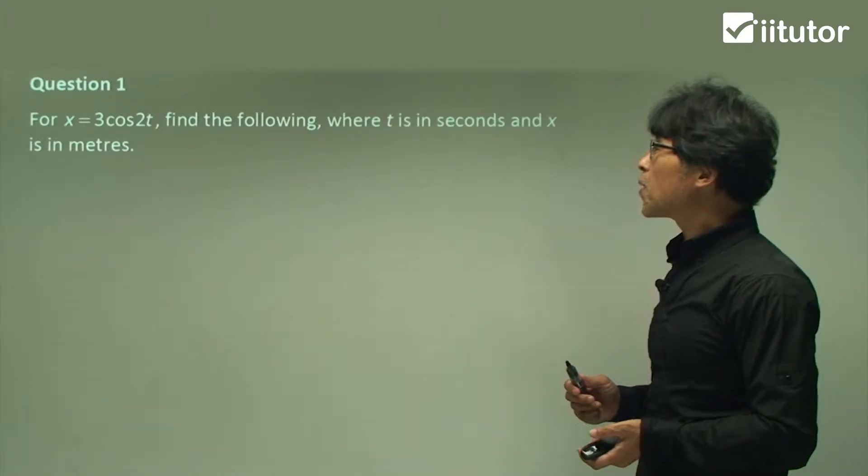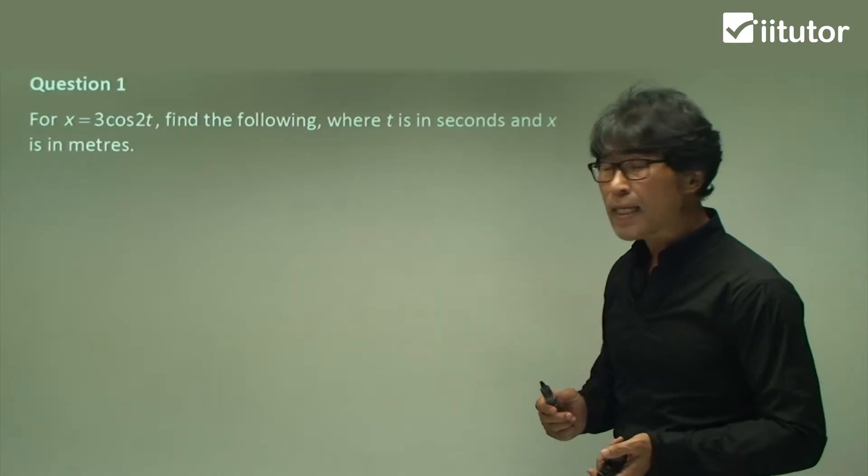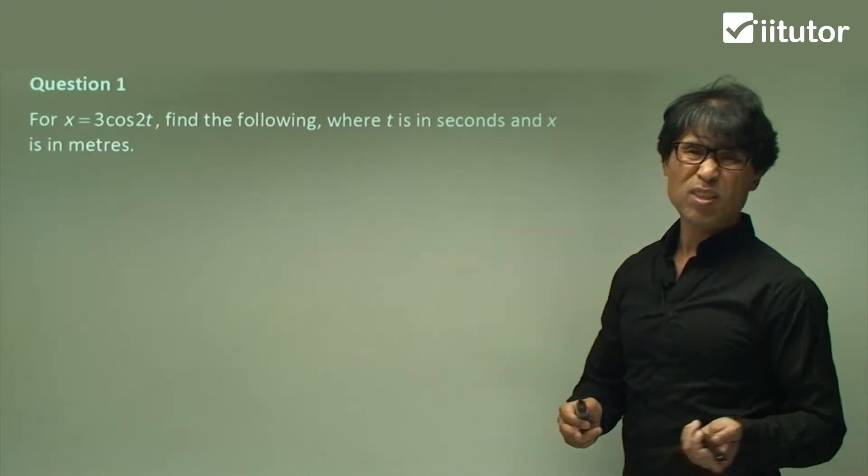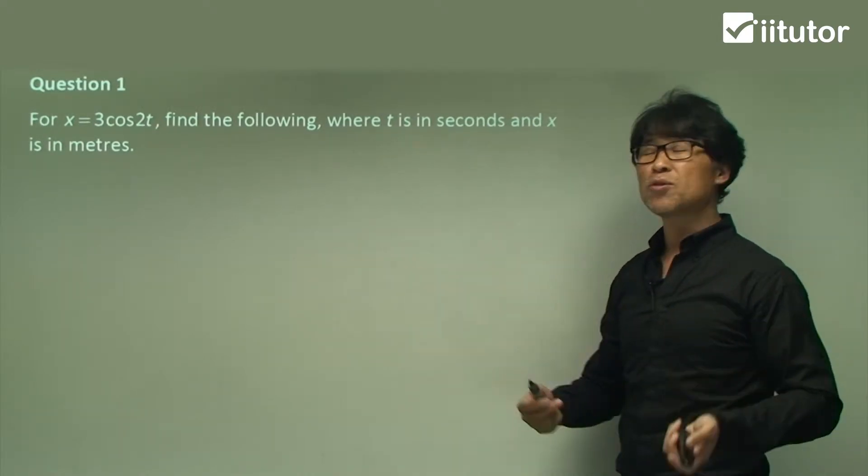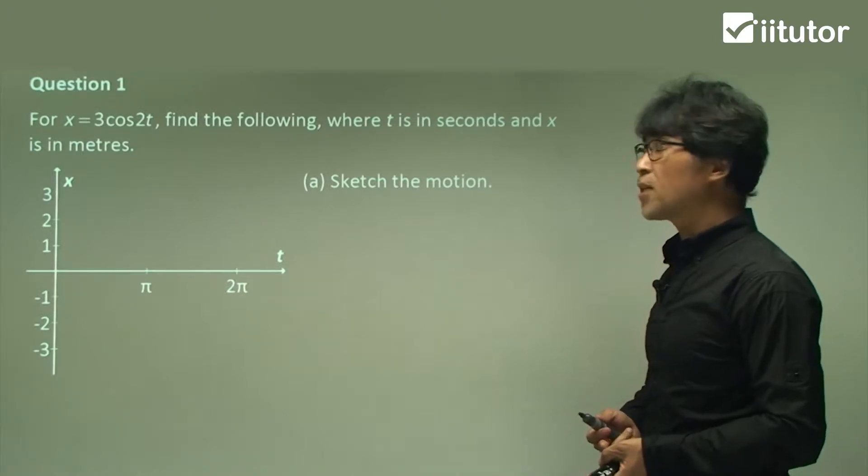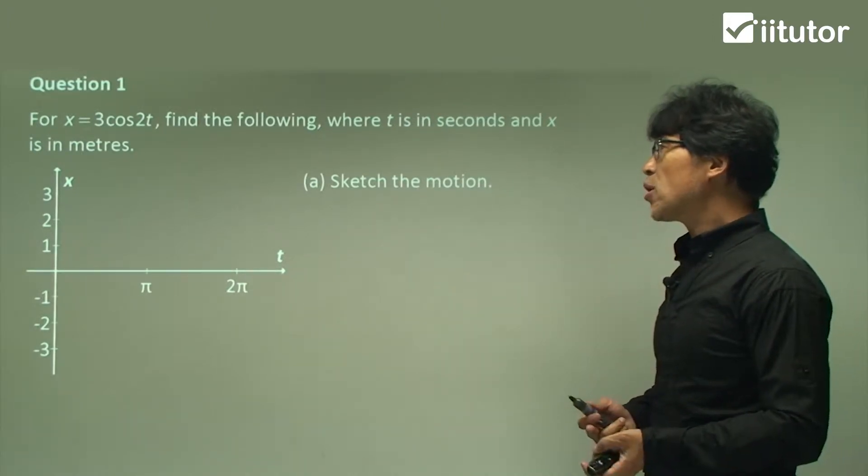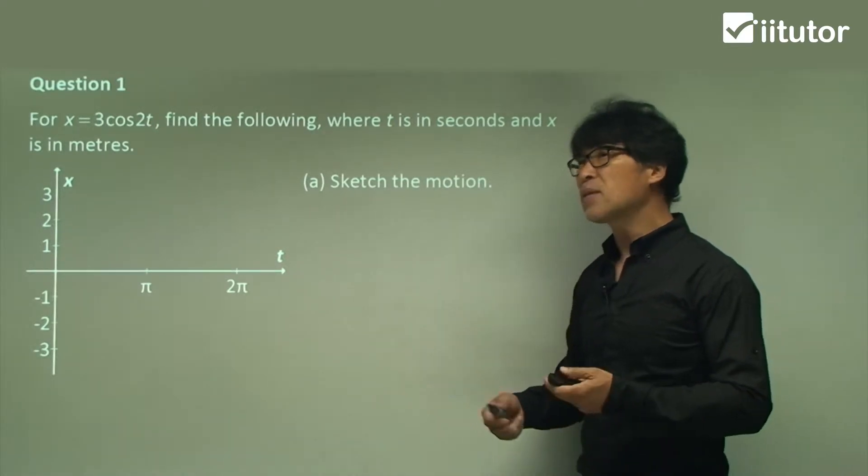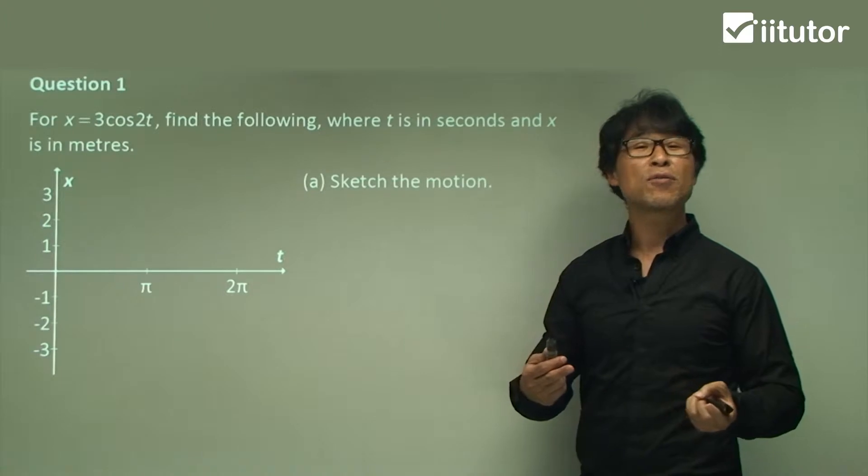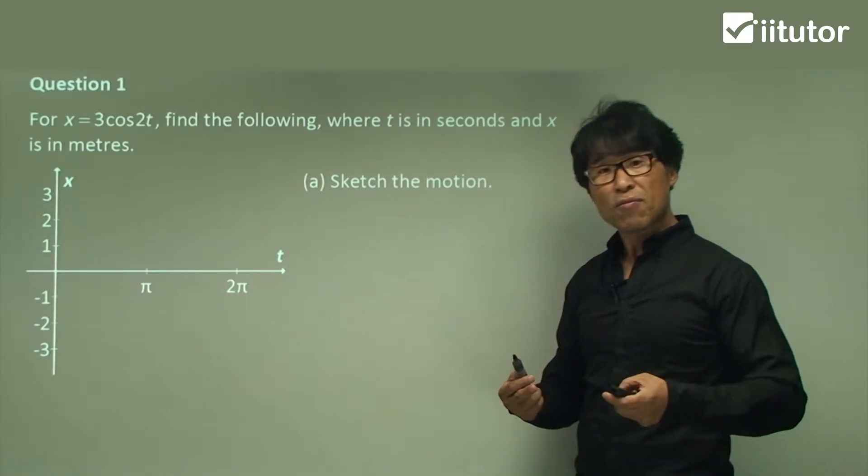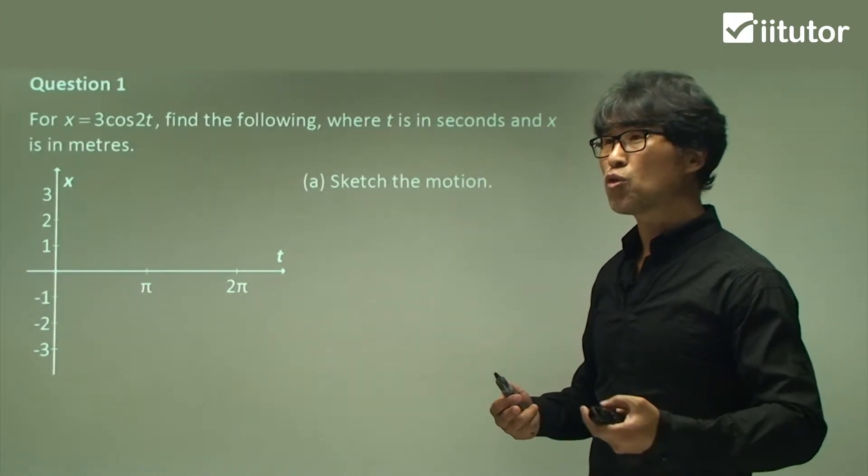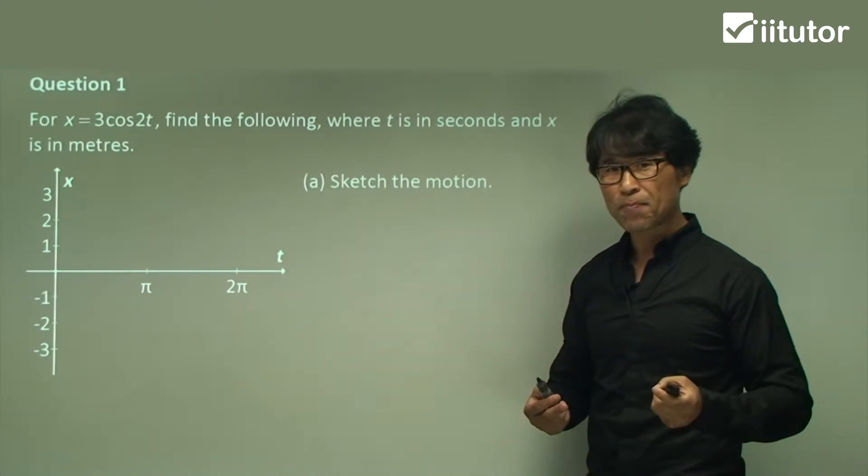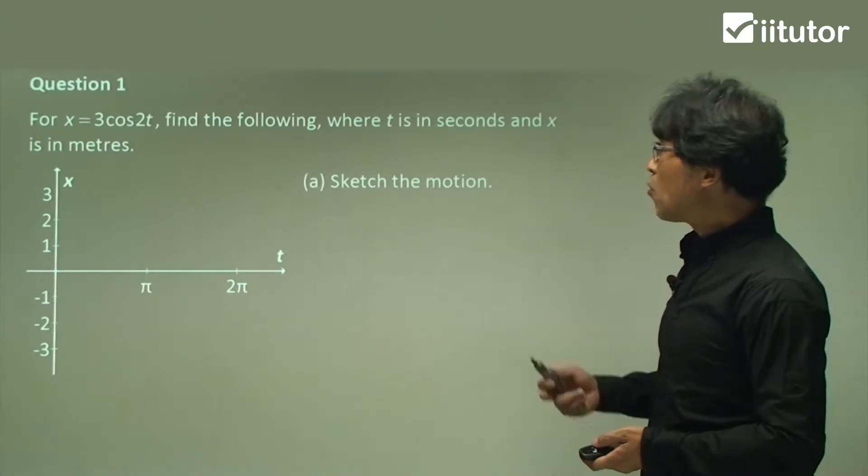Look at question one. For x equals 3 cos 2t, we're going to find something. Make sure time is in seconds and x is in meters. First step is to sketch the diagram. Some questions do not ask you to sketch the diagram all the time, but even if that's the case, I suggest you draw the diagram because the graph gives you lots of benefit for solving the rest of the question.